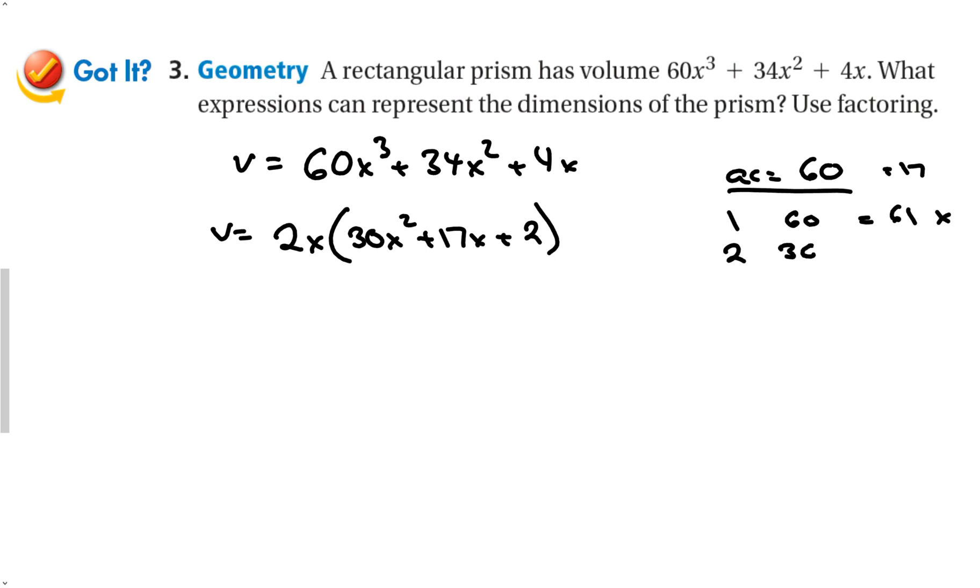2 times 30. That's 32. No good. It's always good to check them all. Even if you can already see the answer. It's good to go through them all. So 3 times 20 is 23. And we're getting closer.